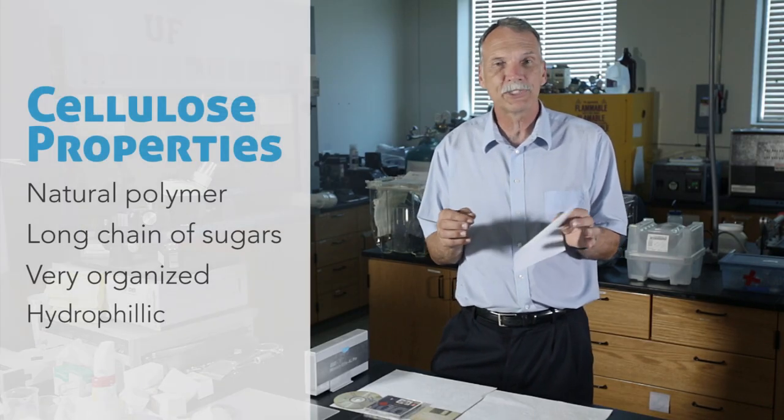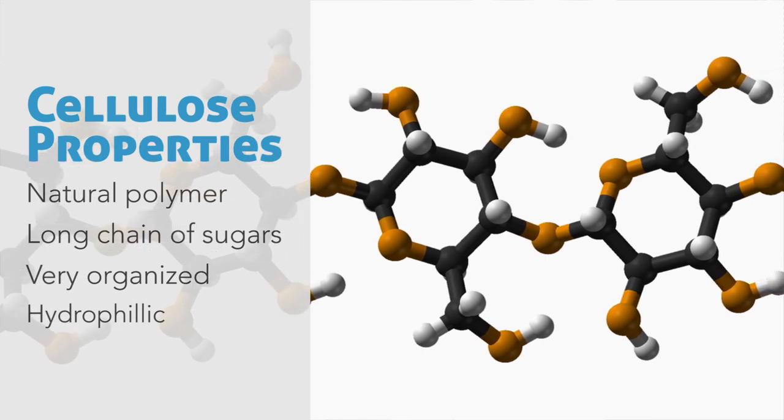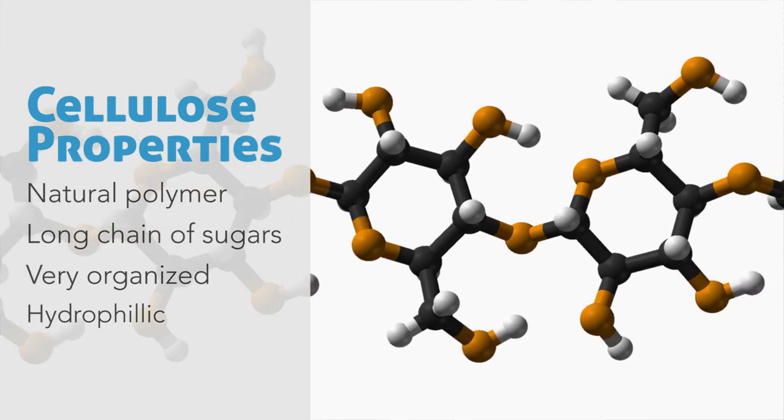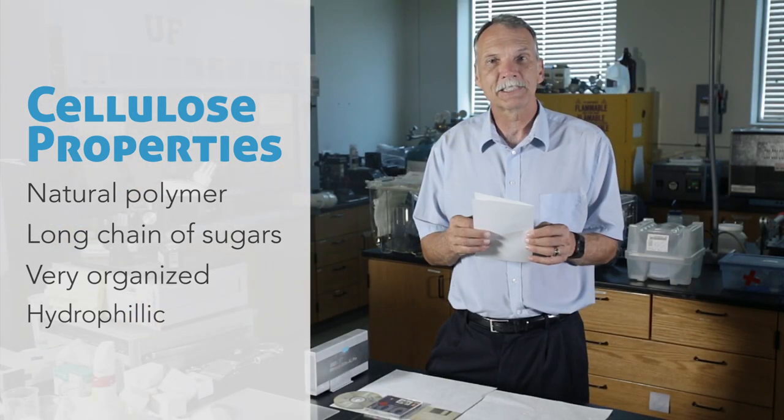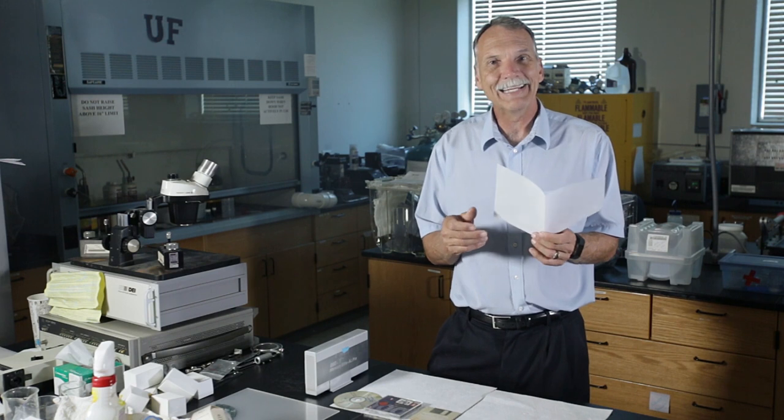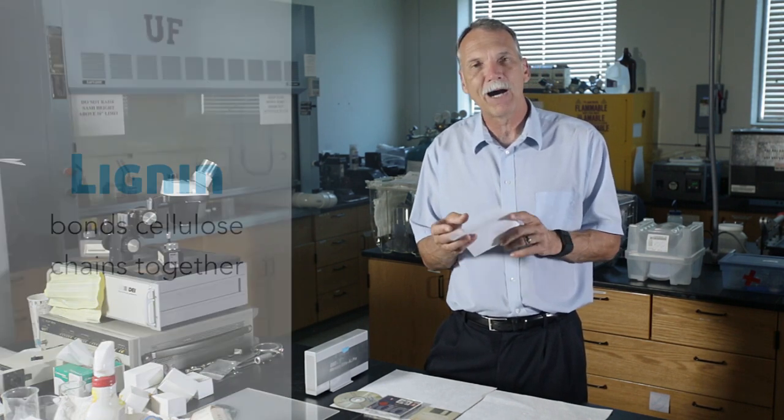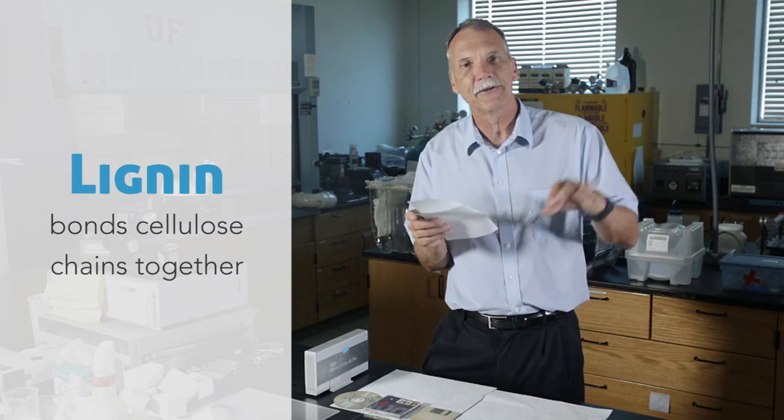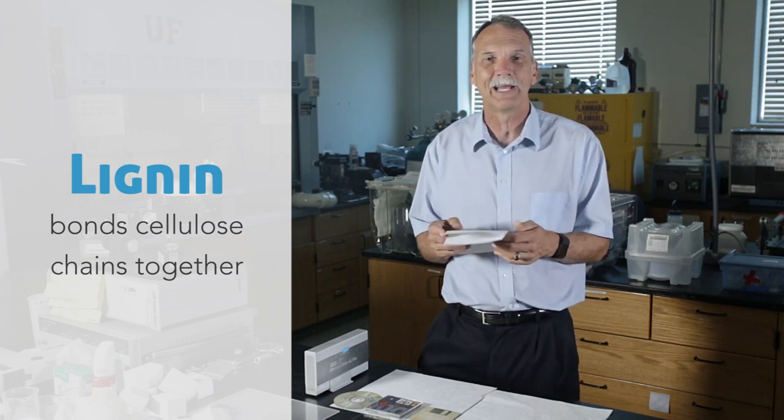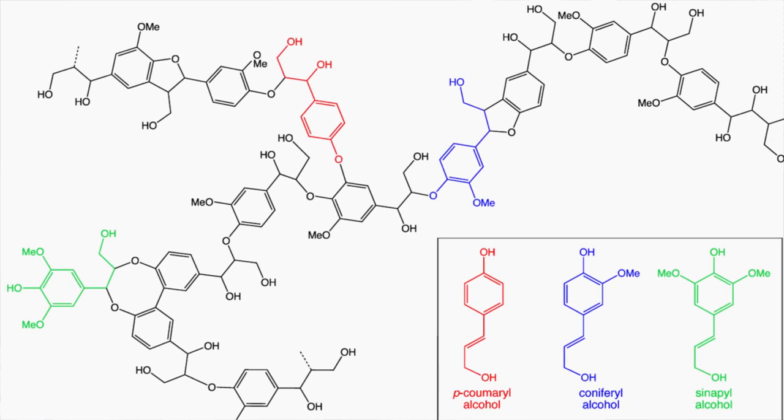Cellulose is a natural polymer, a very long chain of sugars connected together. The chain can be 10,000 sugar units long. It's very organized and tends to be very hydrophilic, so it loves water. Now the lignin in the wood is actually another chemical that bonds these cellulose chains together, and that's what gives wood its strength. It's basically aromatic rings...